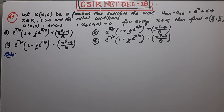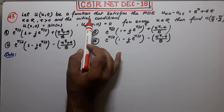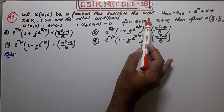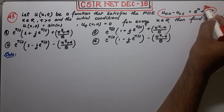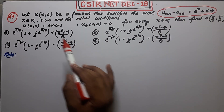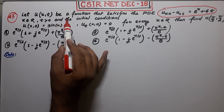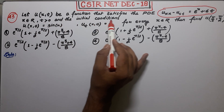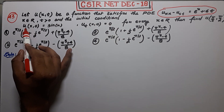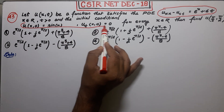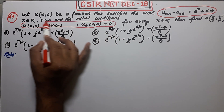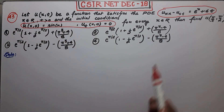The question asks that U(x,t) be a function that satisfies the PDE shown here, where X belongs to R and T is greater than 0. The initial conditions are U(x,0) = sin(x) and U_t(x,0) = 0. What you have to find is the value of U(π/2, π/2).